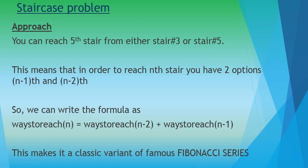We can write the formula to count the total number of ways to reach the nth stair as: ways to reach nth stair = ways to reach (n−2)th stair + ways to reach (n−1)th stair. This formula actually makes it a classic variant of the famous Fibonacci series, and this was the important popular concept I was talking about. Now let's see how we can solve it using dynamic programming.